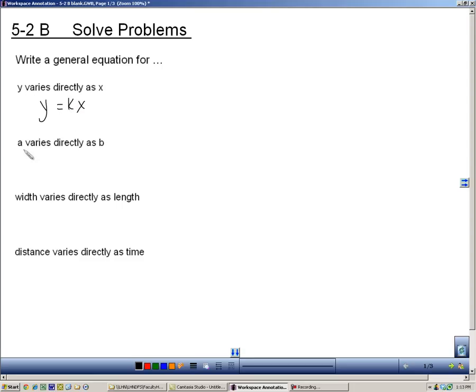So how would you write a varies directly as b? It's very similar. It's just like y varies directly as x. A equals kb, with k being a constant of variation.